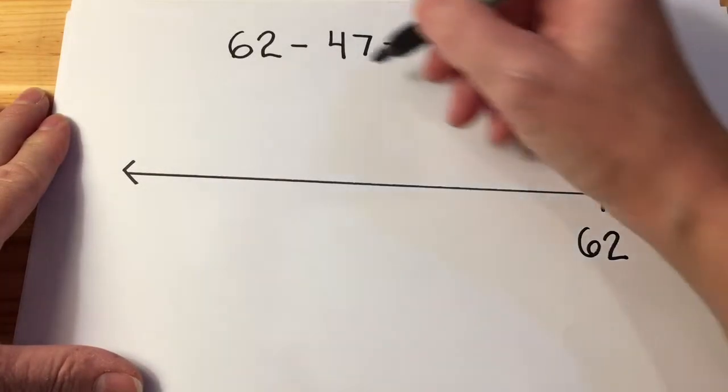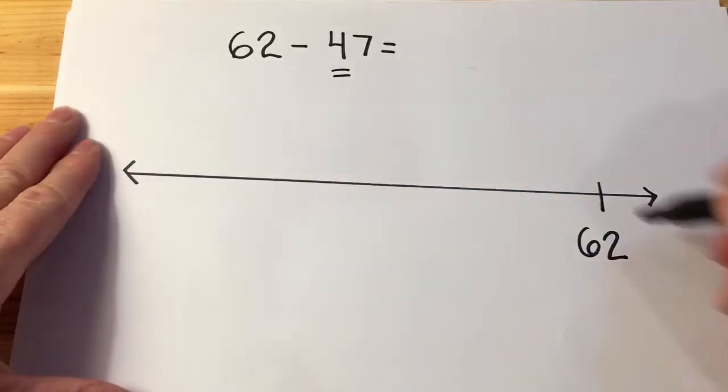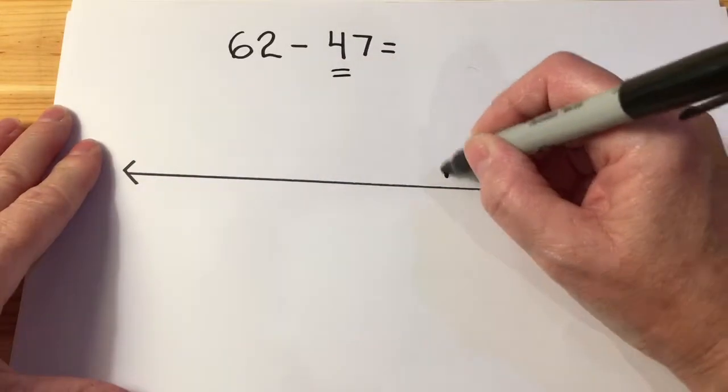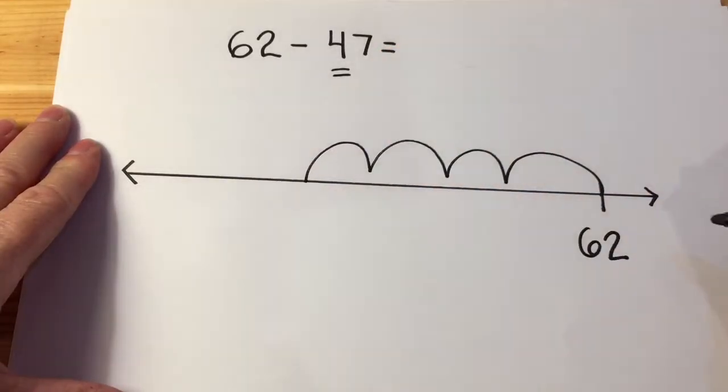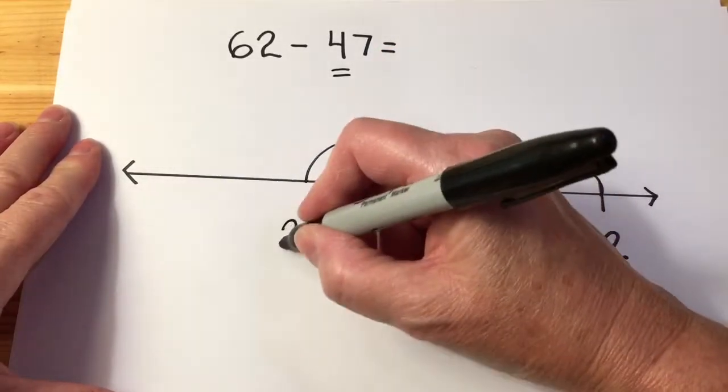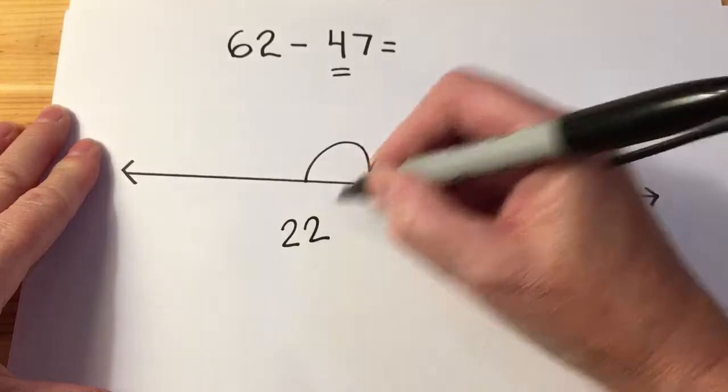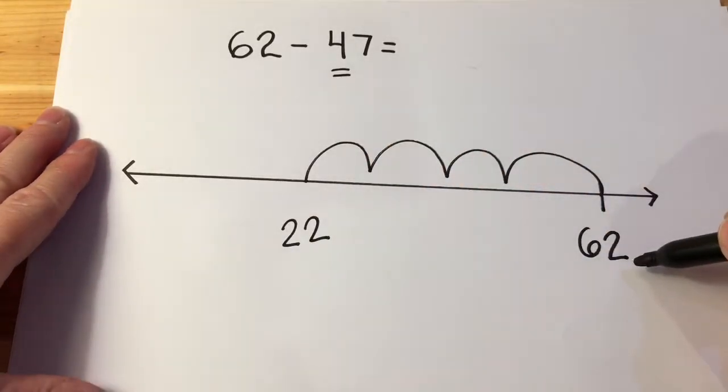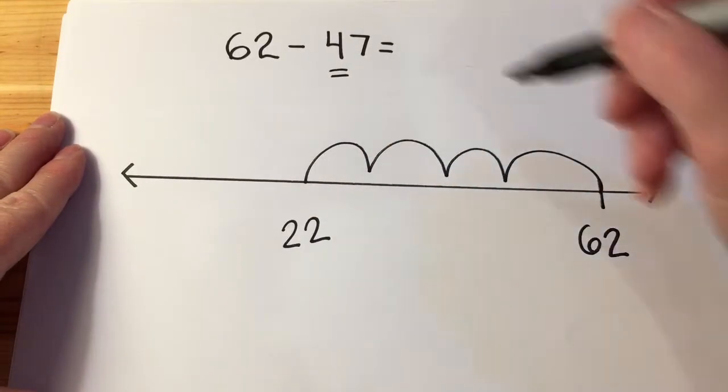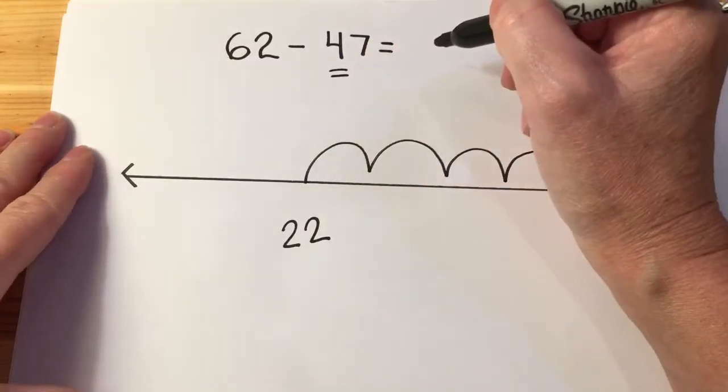My strategy is going to be basically the same. I'm going to move by tens. I move back four tens and I know this takes me to 22, because doing the tens in my head is something that I've been practicing for a while if I am in second grade.